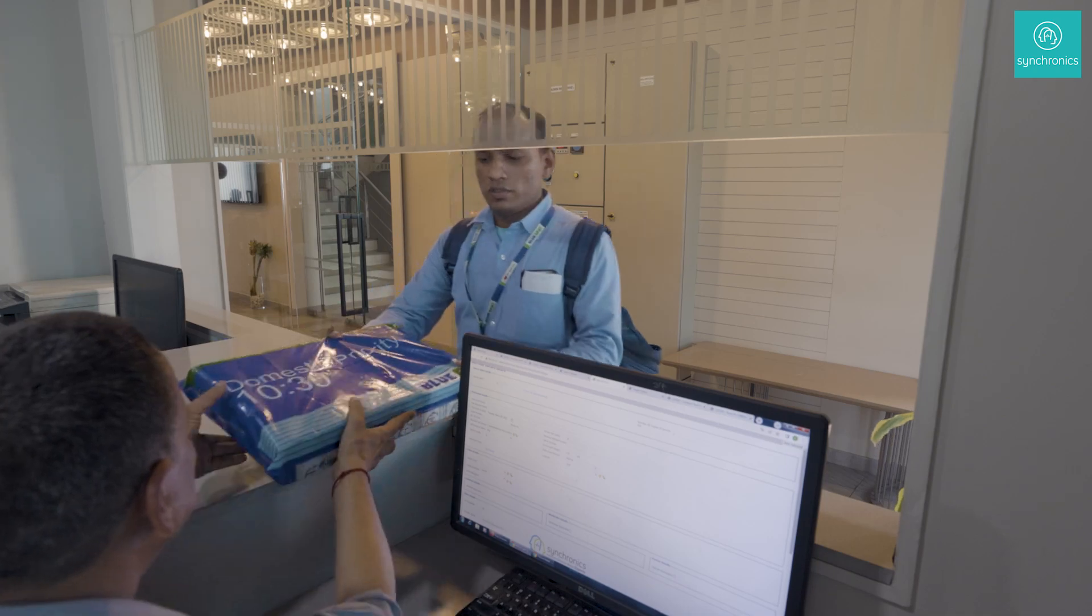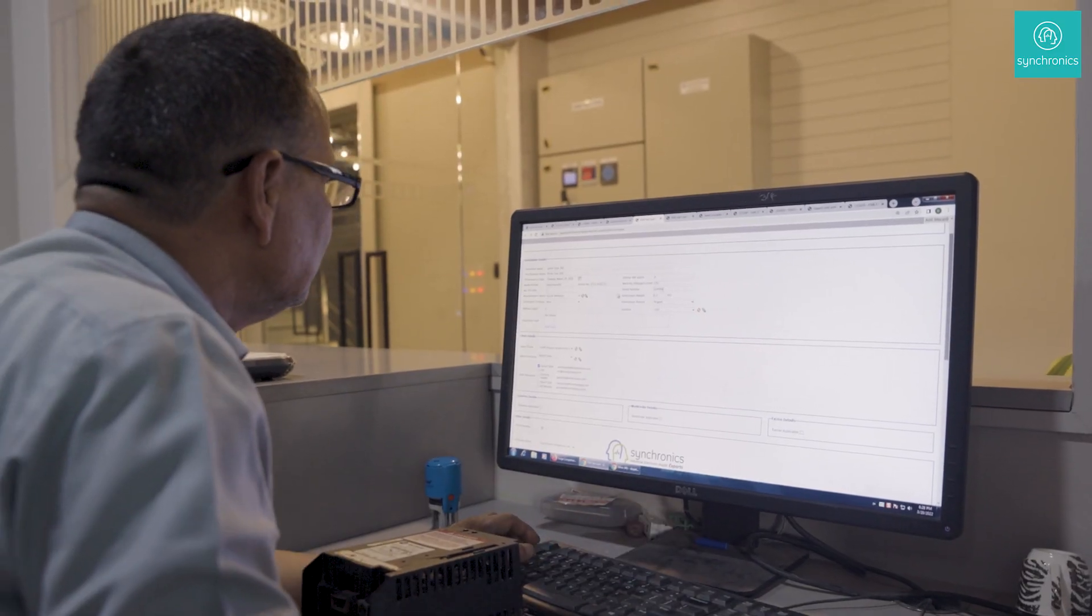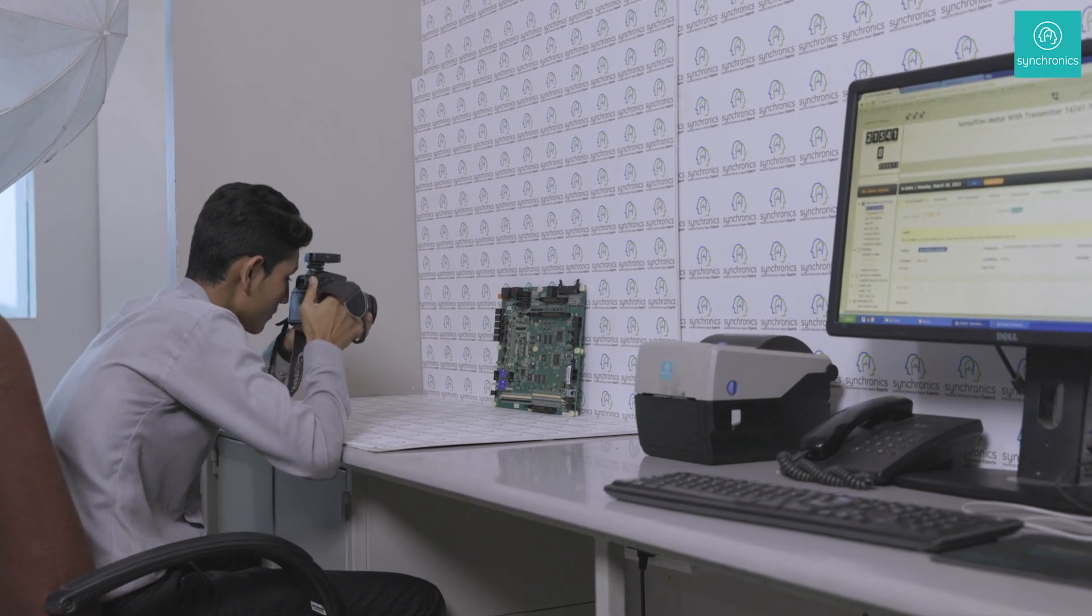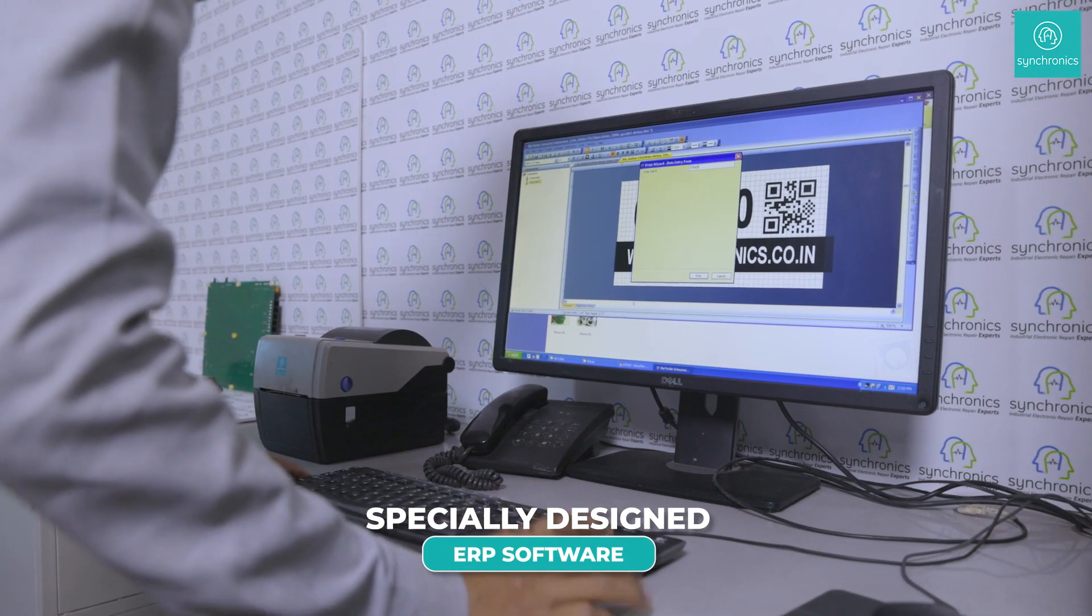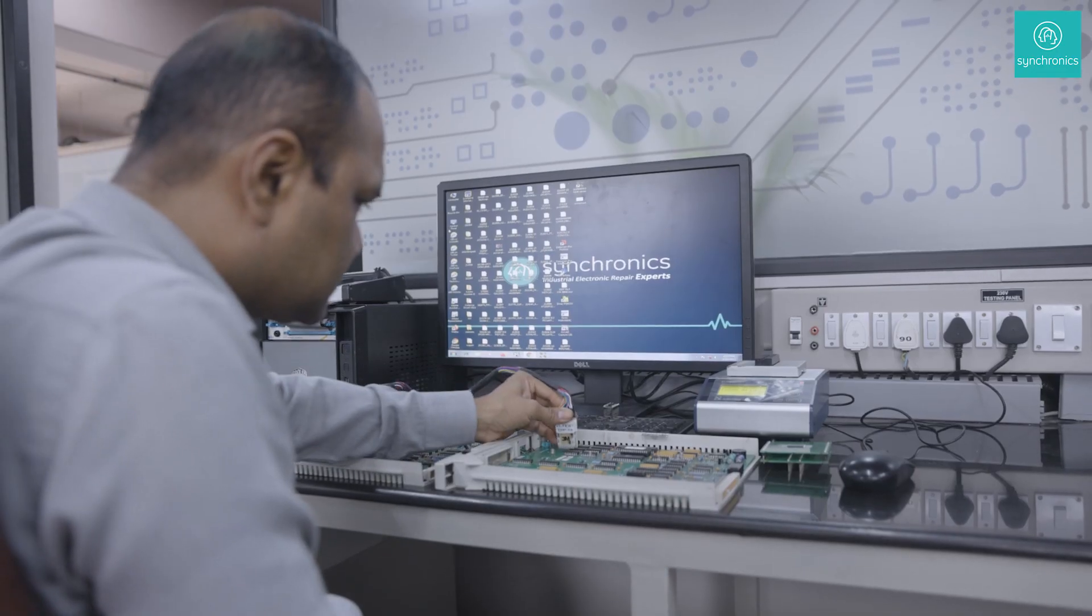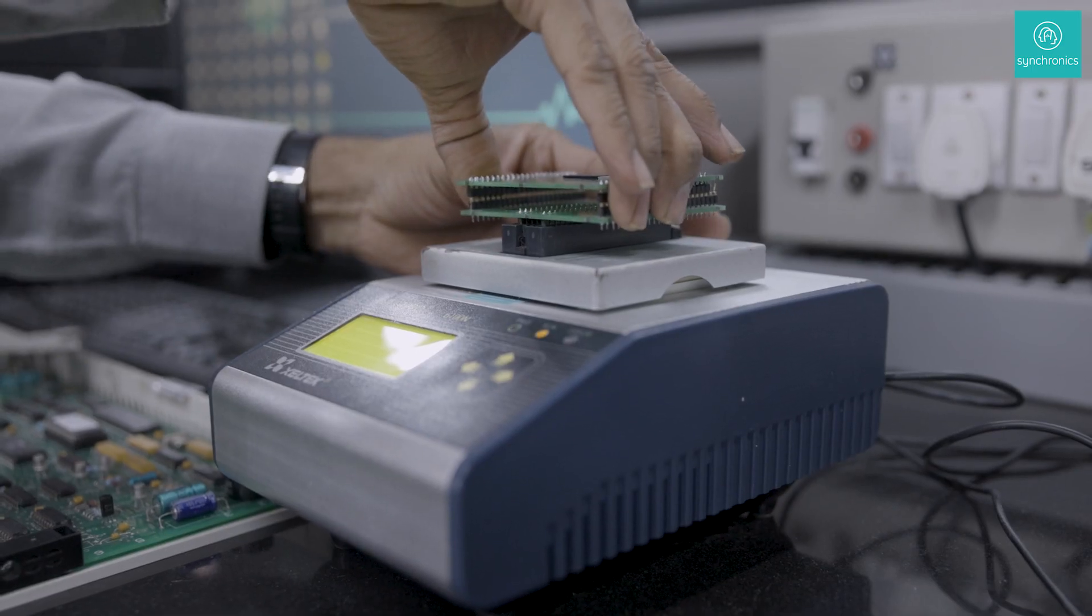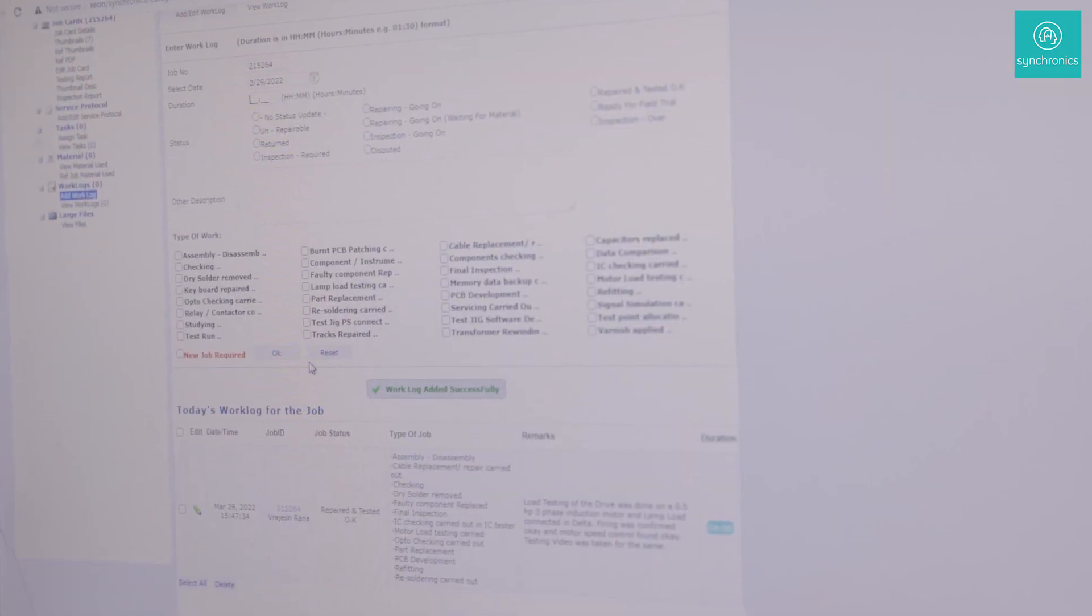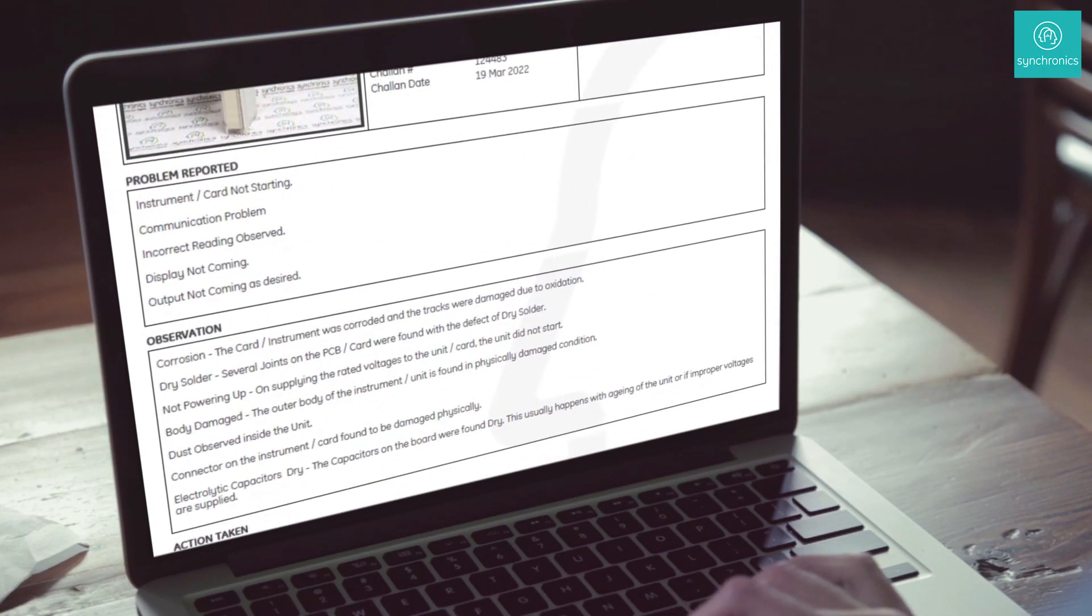When an instrument enters the facility, it is assigned a unique job ID. High resolution photographs are taken, the instrument is logged into the system and added to the repair queue based on priority. Data backups are carried out wherever possible and repairs are logged at every stage for complete traceability. Root cause analysis reports can be furnished upon request.